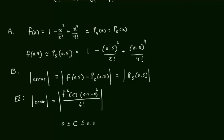We don't know what this value of c is — that is an important ingredient. The only thing the theorem tells us is that c has to be between 0 and 0.5. So I cannot maintain equality because I don't know what it equals. What I can say, however, is that this expression will be less than or equal to the sixth derivative of c at its maximum, times 0.5⁶ over 6!.